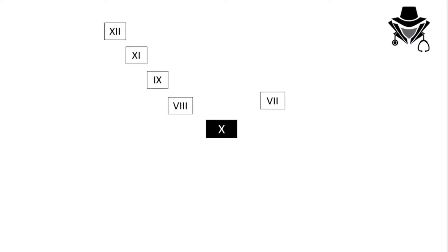The initiator of the intrinsic pathway is subendothelial collagen, and the initiator of the extrinsic pathway is tissue factor. To memorize it: subendothelial collagen — the longer name — is associated with the longer pathway, and tissue factor — the shorter name — with the shorter pathway. So for the intrinsic pathway, subendothelial collagen activates factor 12, which activates factor 11, then factors 9 and 8, reaching factor 10.